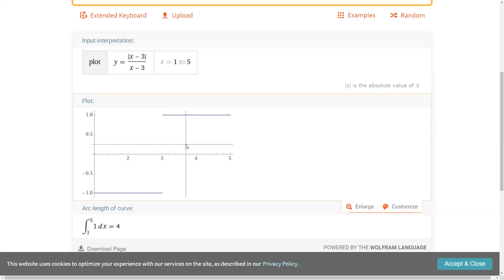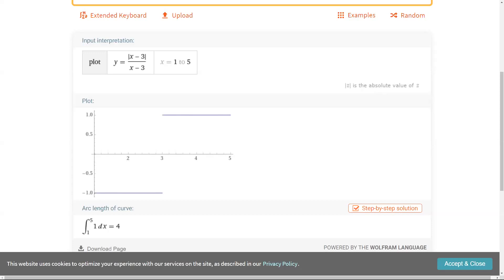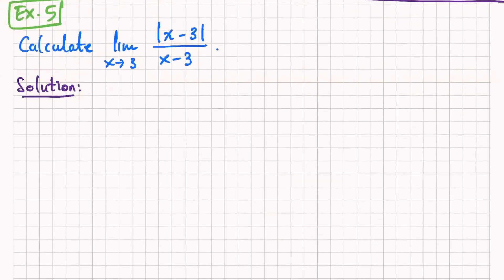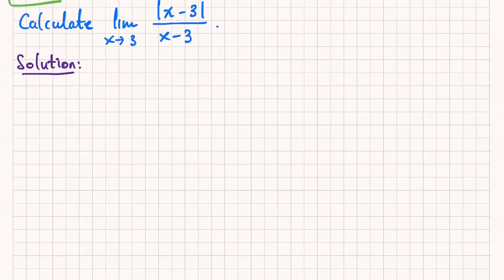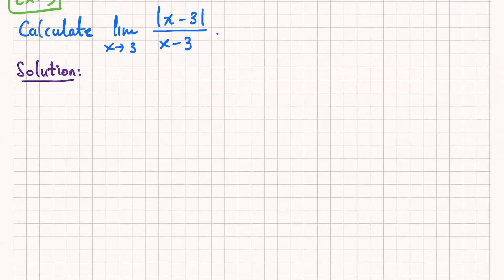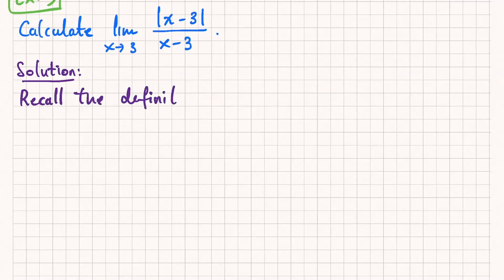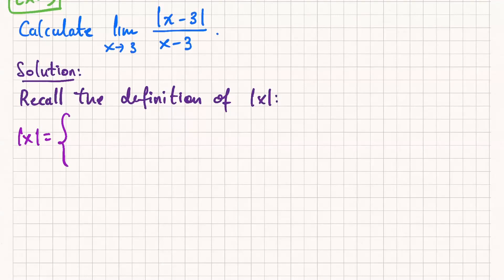So let's go back to the presentation and recall what the absolute value function is. The absolute value function is kind of a sneaky thing — we use a special symbol for it, but it really is a piecewise defined function. What are the two pieces of absolute value of x? One piece is if x is greater than or equal to zero, and the other piece is if x is negative.